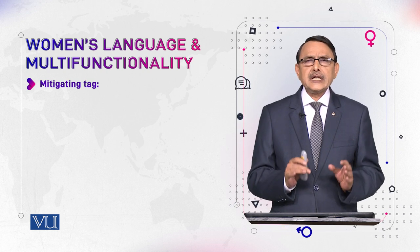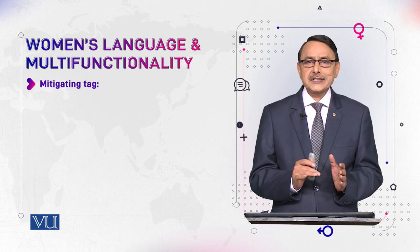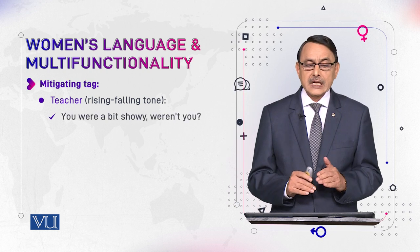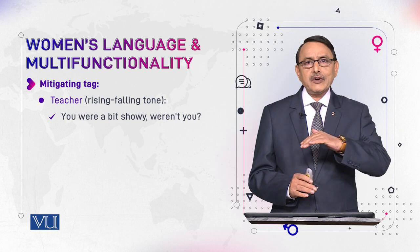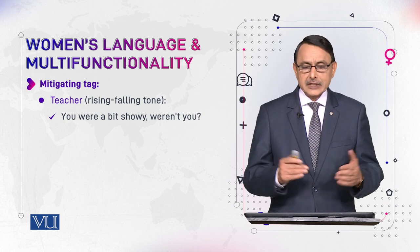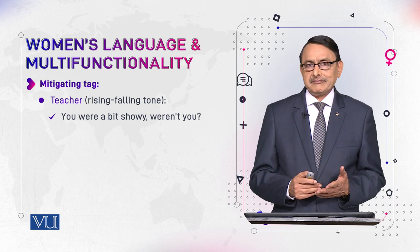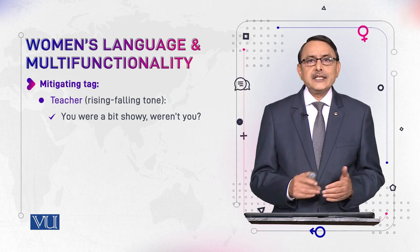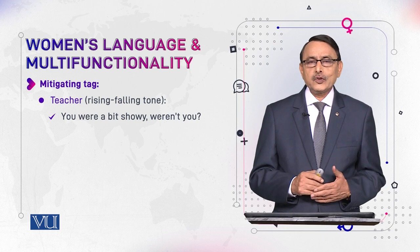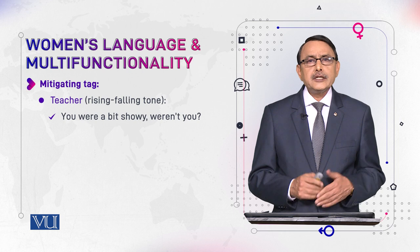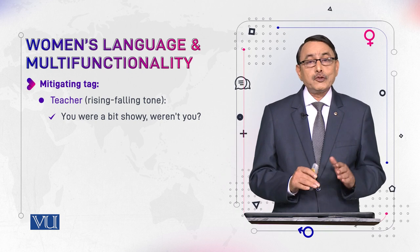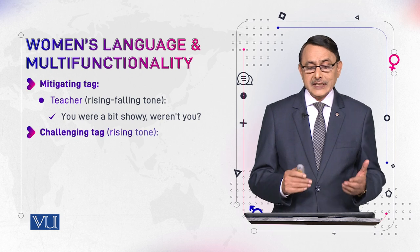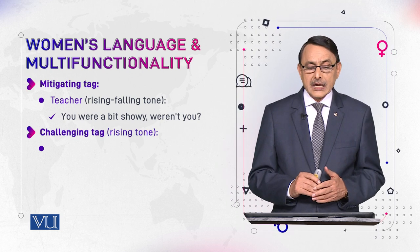The mitigating function is another use of tags. For example, if you have remarked something very harshly and want to soften or decrease that harshness, you use a tag question. A teacher might say in a rising-falling tone, 'You were a bit showy, weren't you?' — instead of directly blaming the student. The tag with a rising-falling tone softens the statement so the student doesn't feel insulted.